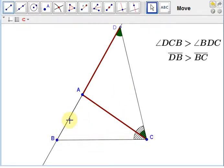So, side DB is greater than side BC. In turn, DB is equal to side AB plus side AD, and by construction, side AD has the same length as side AC.